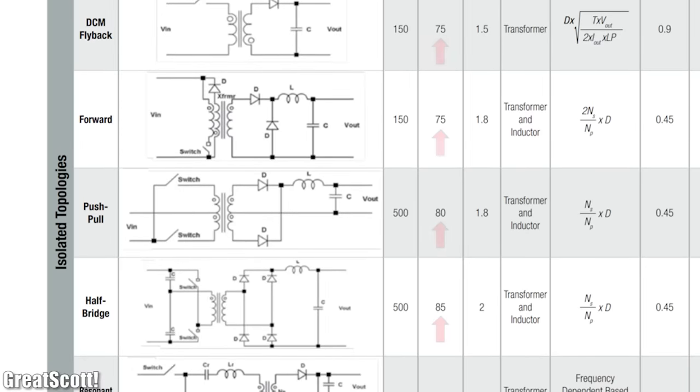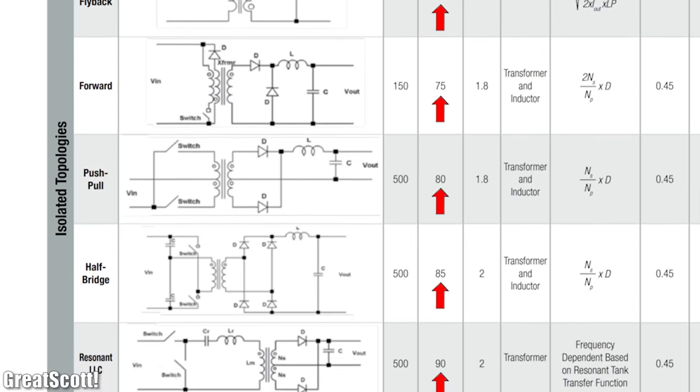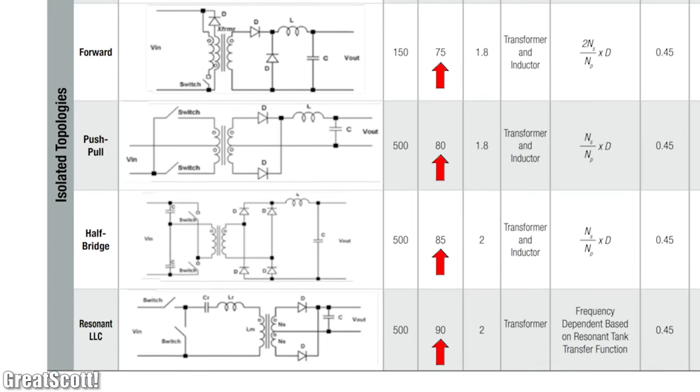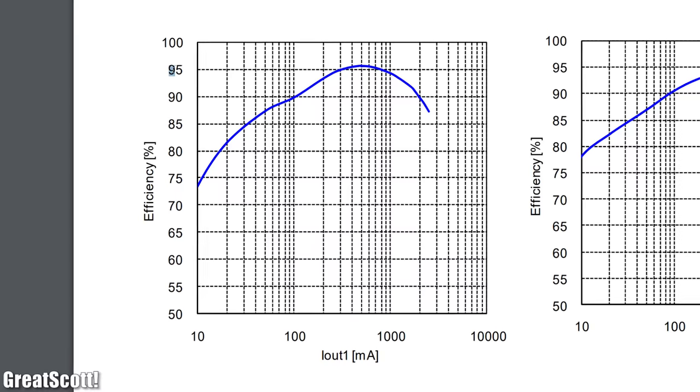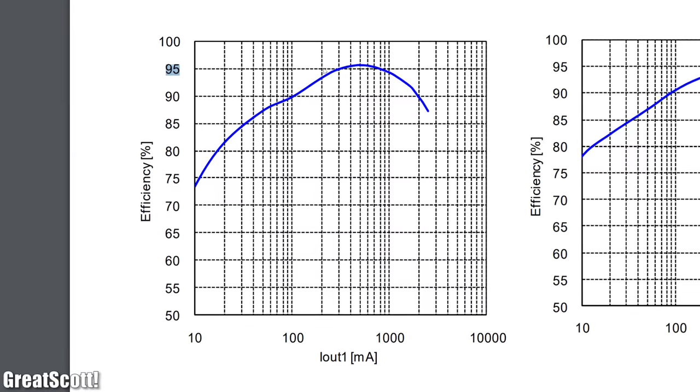As you can see, their efficiency is around 85 to 90% at max, which is not bad, but a synchronous converter can supposedly reach 95% efficiency, and that actually sounds too good to be true.